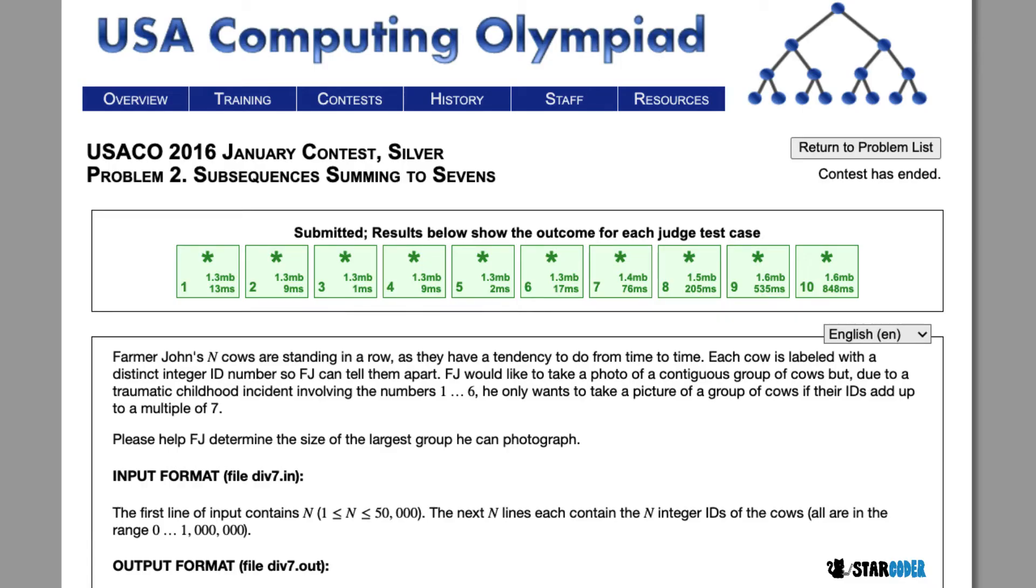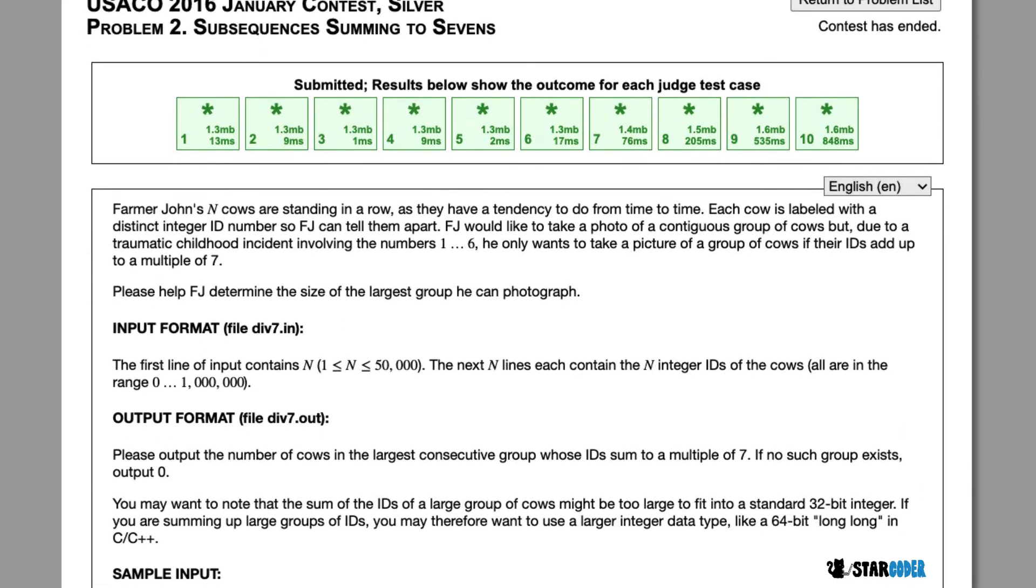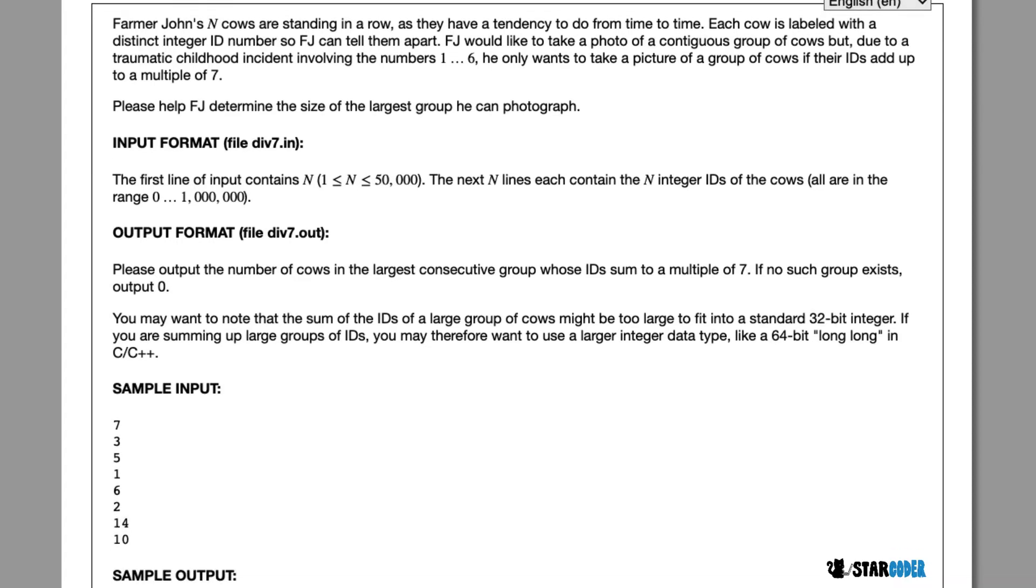Farmer John has n cows standing in a row. Each one of them is going to have an ID number, and we want to find the largest group of cows Farmer John can photograph, assuming he photographs all of the cows with a consecutive range, so that the sum of all of their IDs is a multiple of seven.